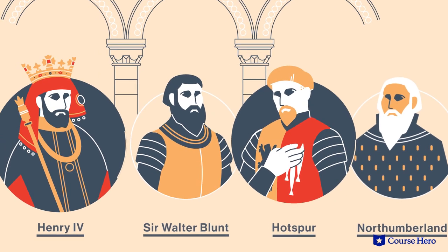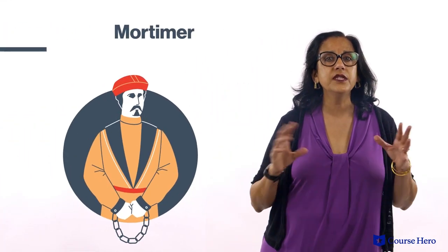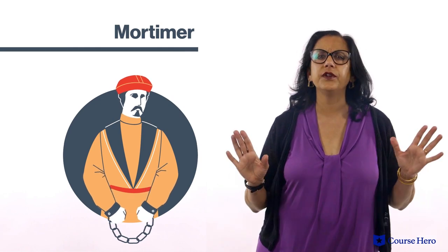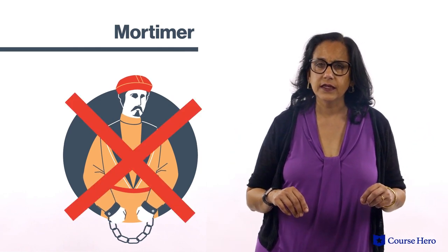Not only is Prince Hal going to wear a disguise and pretend to rob his friends, but he also shares his plans to play at being a slovenly drunk until it suits him, at which point his newly honorable behavior will attract more eyes. When Hotspur arrives at King Henry's court, he explains that he refused to send the prisoners to the king because he took offense at the way a courtier addressed him after the battle. Hotspur then asks the king to pay the ransom to release his brother-in-law, Edmund Mortimer, from the Welsh rebels. But King Henry refuses, believing Mortimer to be a traitor. This offends Hotspur's honor, so he joins the rebels.